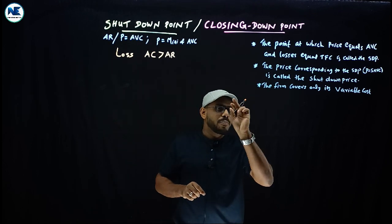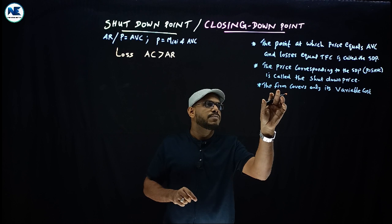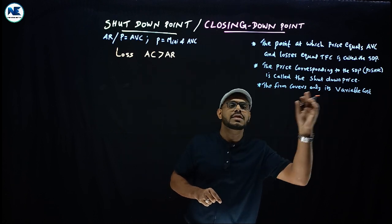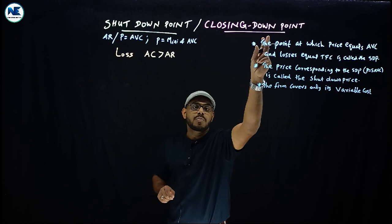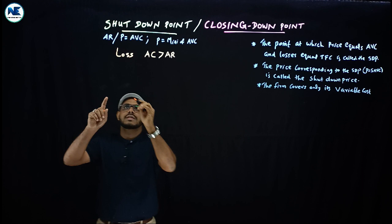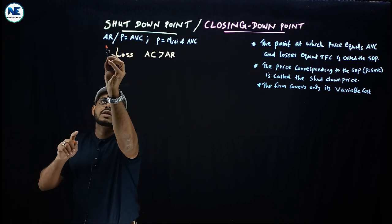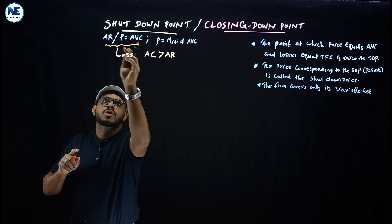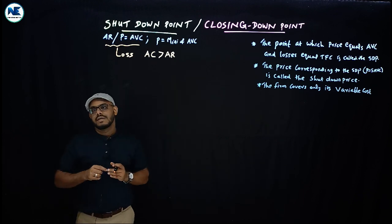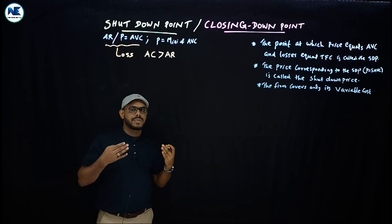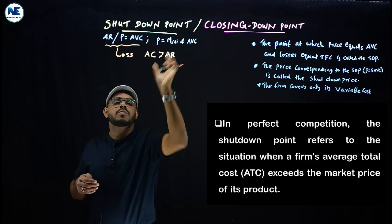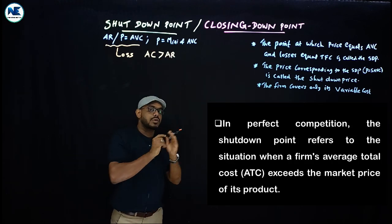The point at which the firm covers only its variable cost is known as the closing down point or shutdown point. The key condition here is that average revenue or price is equal to average variable cost. For entrance exams, the correct expression is: price equals the minimum of average variable cost.